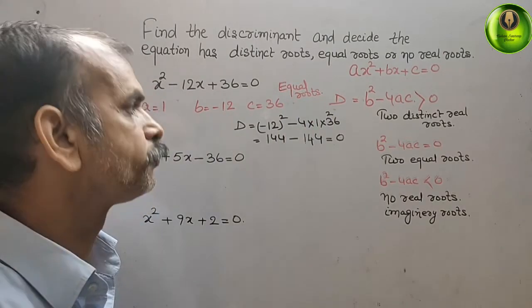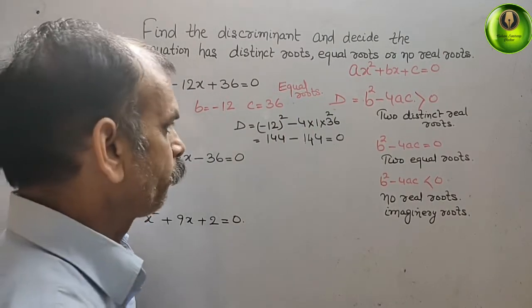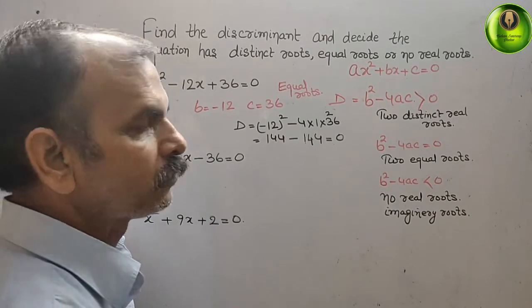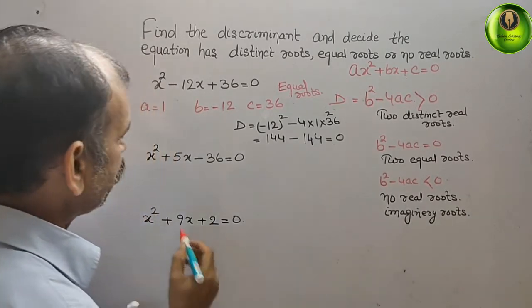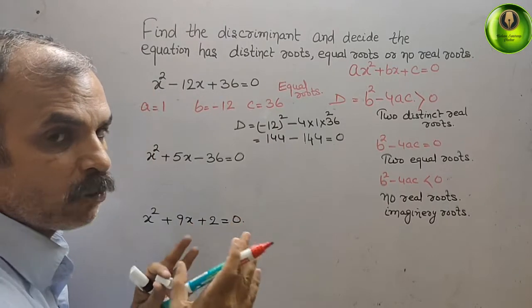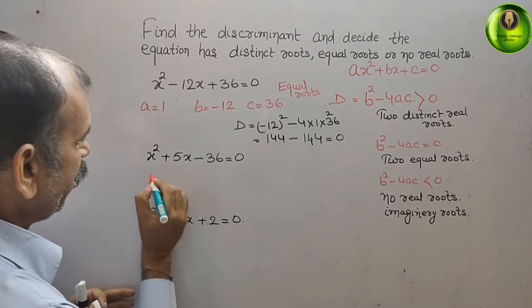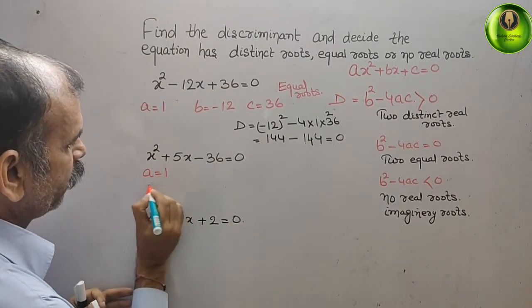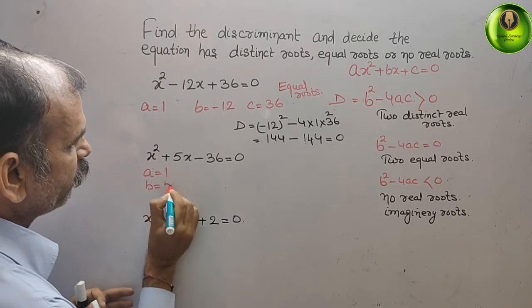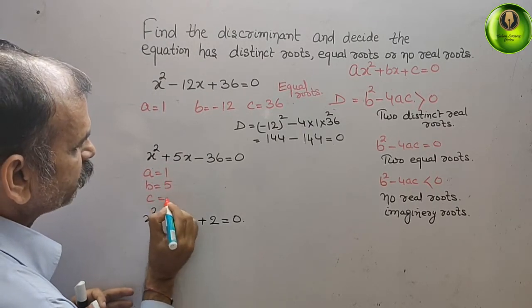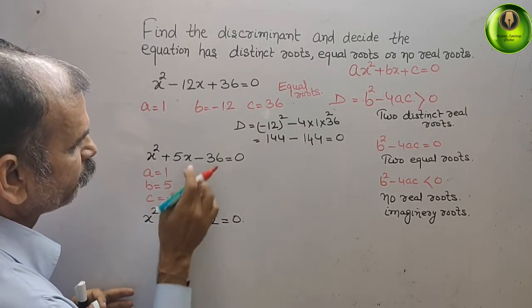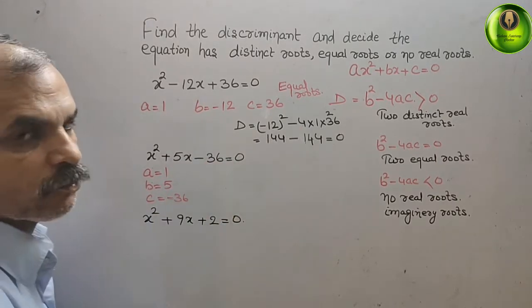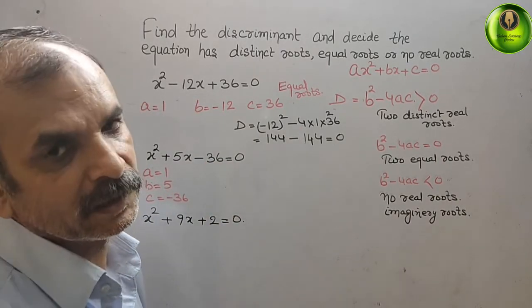Now we will go for the second one. And first we have to find out a, b and c. So a is 1, b is 5, and c is minus 36. You can see here x square plus 5x minus 36.